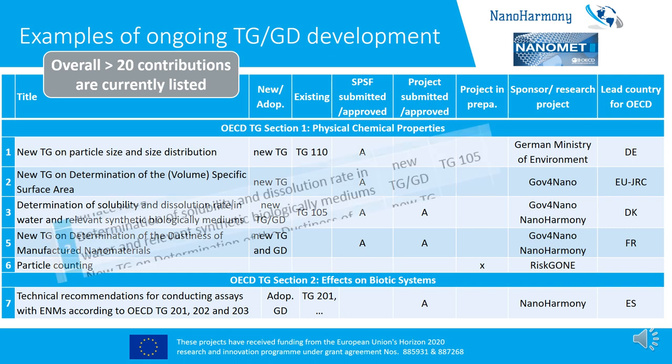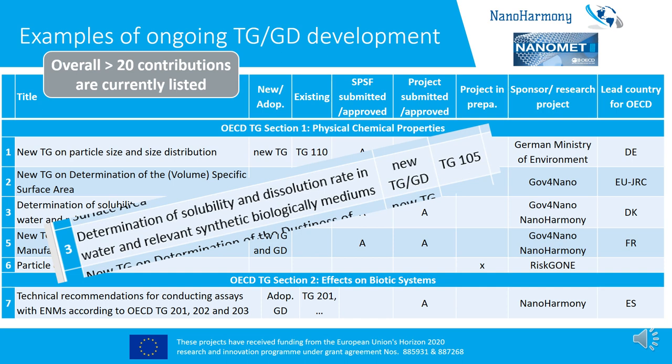To illustrate how important coordination and cooperation are, consider the example of determination of solubility and dissolution rate in water and relevant synthetic biological media. Several methods exist, developed in different countries. For dissolution and dissolution rate, we may need two different test methods applicable for physicochemical characterization, human health assessment, and environmental assessment. NanoMed and NanoHarmony try to facilitate development, avoid duplication of work, and increase the speed of development by enhancing the flow of information.